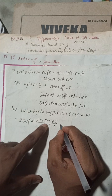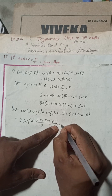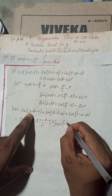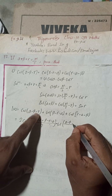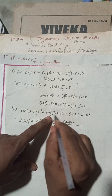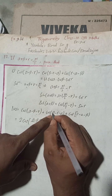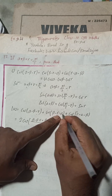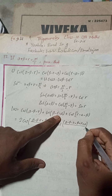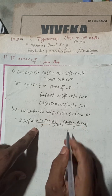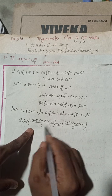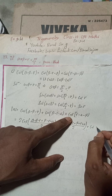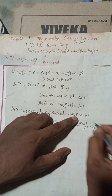So cos((C+D)/2): C is alpha minus beta minus gamma and D is the second term. For C minus D, we change all signs: minus beta becomes plus beta, minus gamma becomes plus gamma, and minus alpha becomes plus alpha, then divided by 2. We apply 2 cos((C+D)/2) cos((C−D)/2).